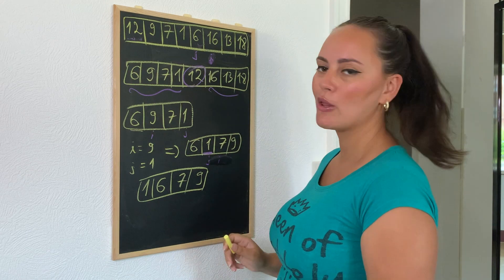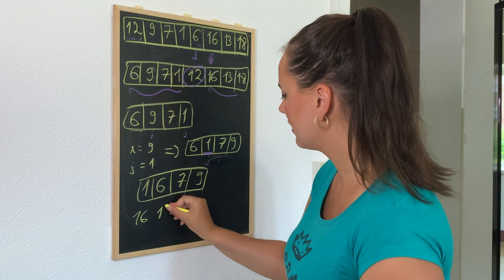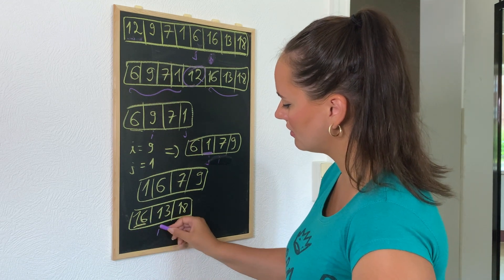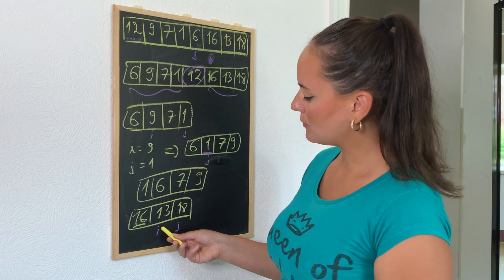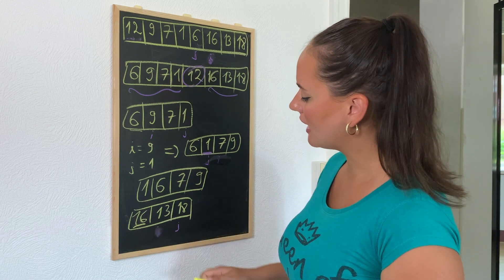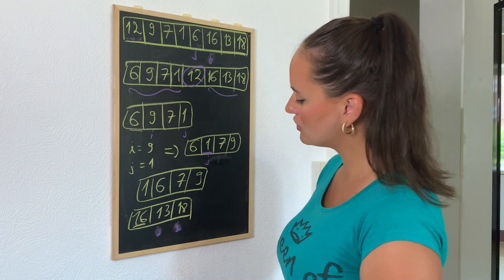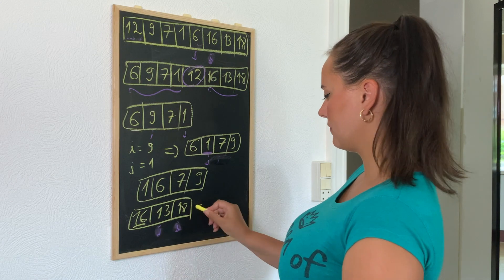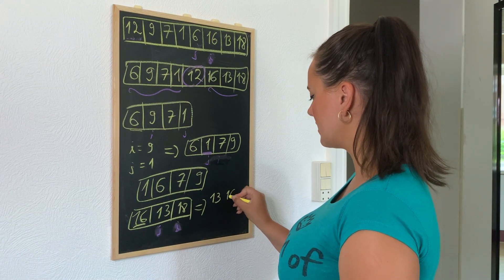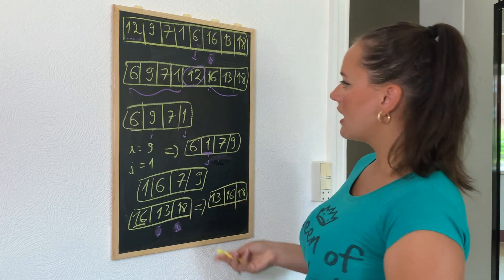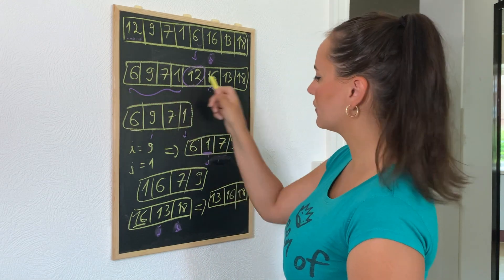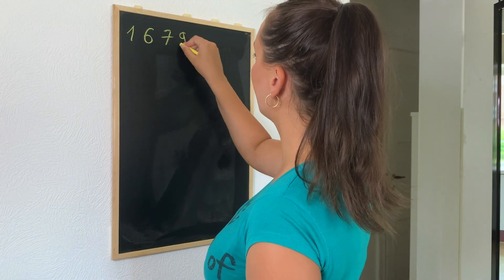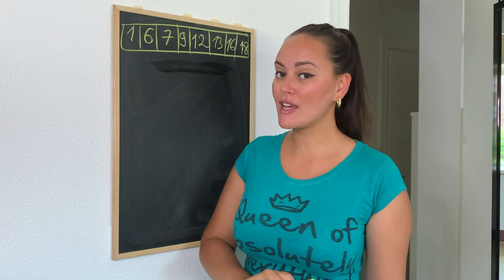Now we have only the last three elements: 16, 13, and 18. With 16 as our pivot, i is 13 and j is 18. Since i is smaller than 16 and j is bigger than 16, we increment. This tells us to move 16 instead of 13, giving us: 13, 16, 18. Putting all the pieces together, our final sorted array is: 1, 6, 7, 9, 12, 13, 16, 18.